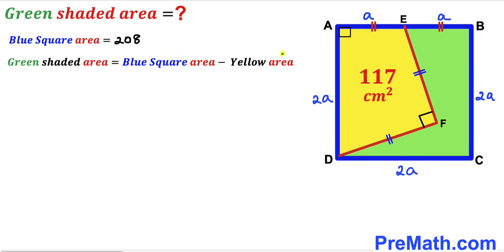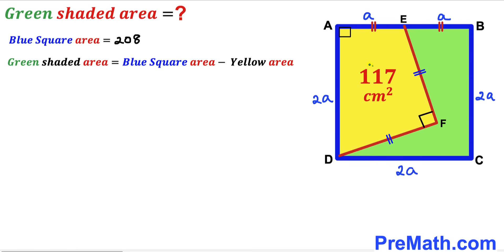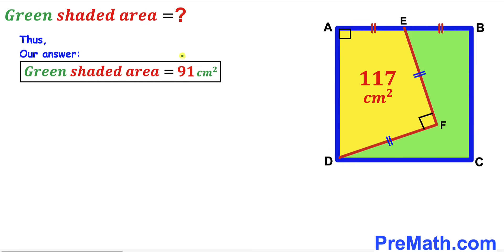In our final step, green shaded region area equals blue square area minus yellow shaded region area: 208 minus 117 equals 91 centimeters square. The green shaded region area is 91 centimeters square. Thanks for watching and please don't forget to subscribe for more videos.